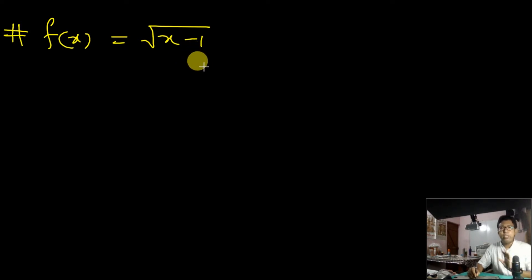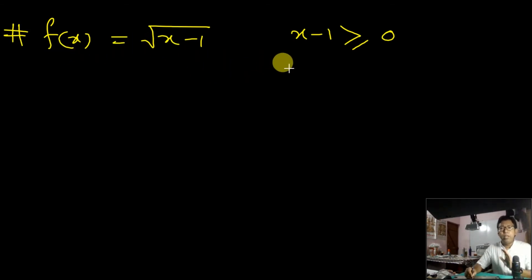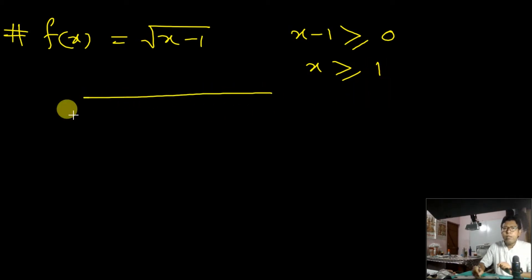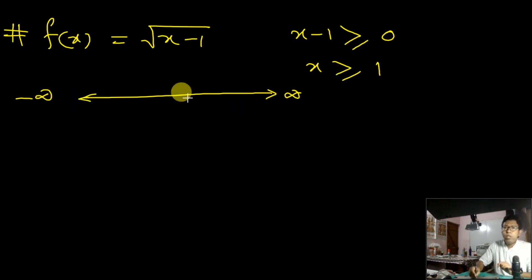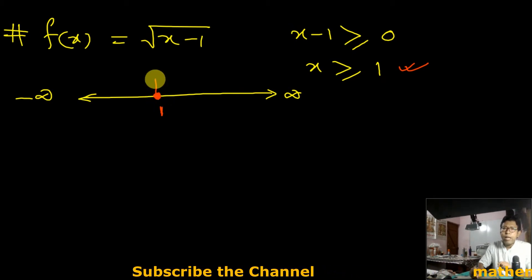Next, I want to show another function: f(x) = √(x−1). As I said earlier, the expression under the root — here x−1, which is a polynomial — cannot be negative. That means x−1 must be greater than or equal to 0 for f(x) to be real, which gives x ≥ 1.